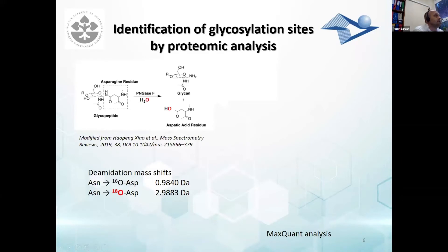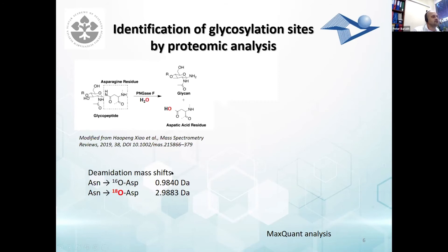The next analysis we can offer is identification and confirmation of glycosylation sites. We utilize a completely proteomic approach. Upon glycosidase treatment, a water molecule is incorporated into the structures of the glycan and the asparagine residue, effectively creating a mutation from asparagine to aspartic acid, and this change is associated with a mass shift of one Dalton.